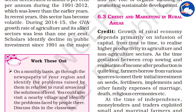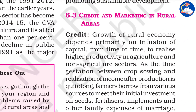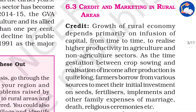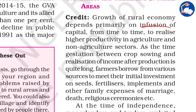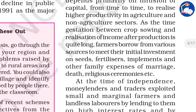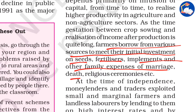Now we'll look at credit and marketing in rural areas. The growth of rural economy depends primarily on the infusion of capital. The rural community is basically dependent on farming, but farming returns are only generated once you sell your produce — which takes a lot of time. In between, there are festivals, urgent family needs, and educational fees. Farmers borrow from various sources to meet initial investment in seeds, fertilizers, implements, and family expenses like marriages and religious ceremonies.